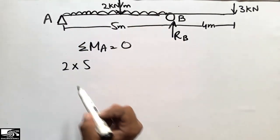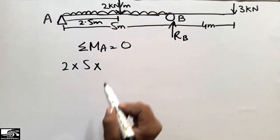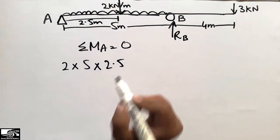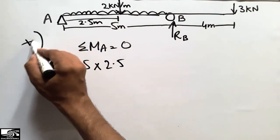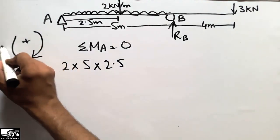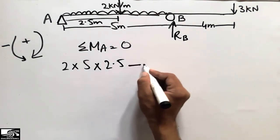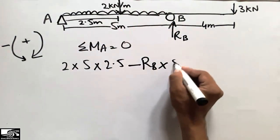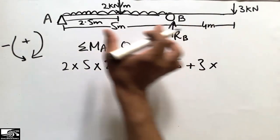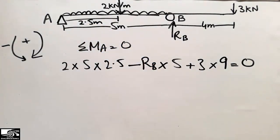The ten kilonewton resultant acts at the center, so the moment arm is 2.5 meters. It acts in the clockwise direction. We take clockwise as positive and anti-clockwise as negative. RB is acting anti-clockwise at point A, so we take minus RB times five meters. The three kilonewton load acts clockwise with a moment arm of nine meters. So the total summation of moments at A equals zero.